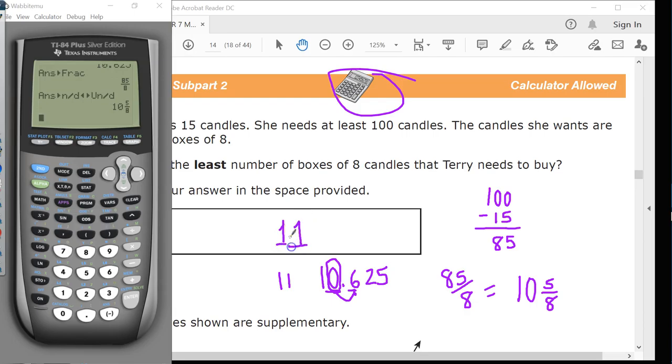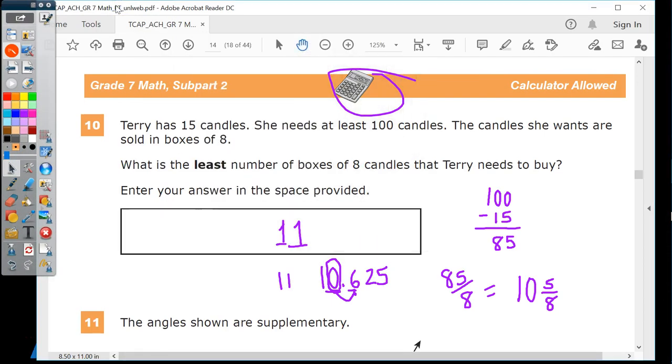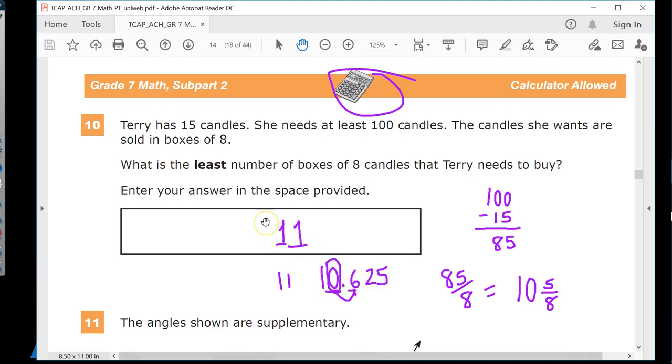So your answer to this question is 11. The reality of the situation is it wouldn't actually matter one bit if this was 10.4. You would still put 11 there.